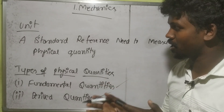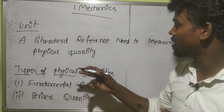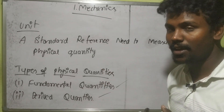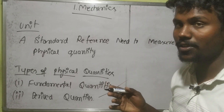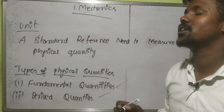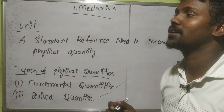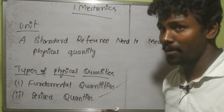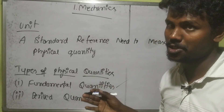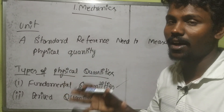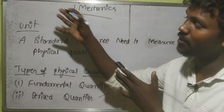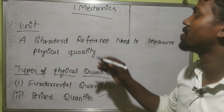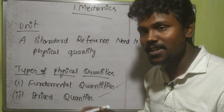Next concept: unit. A unit is defined as a standard reference needed to measure a physical quantity. For example, we measure length in meters, mass in kilograms. A standard reference used to measure any physical quantity is called a unit. There are two types of physical quantities: fundamental and derived.